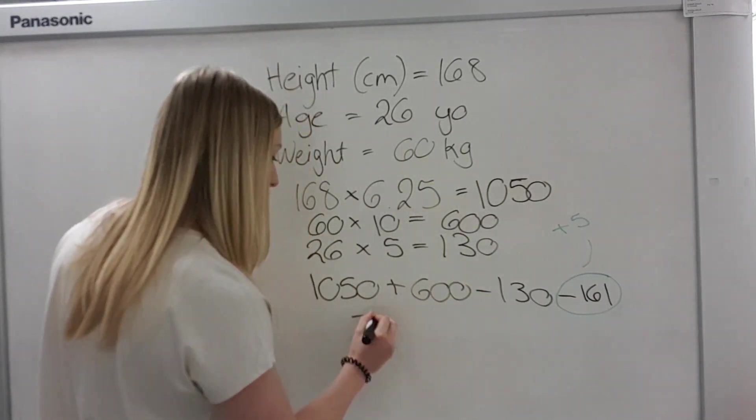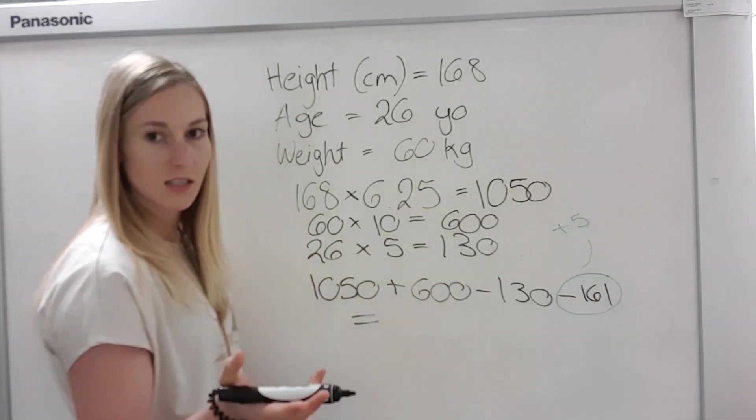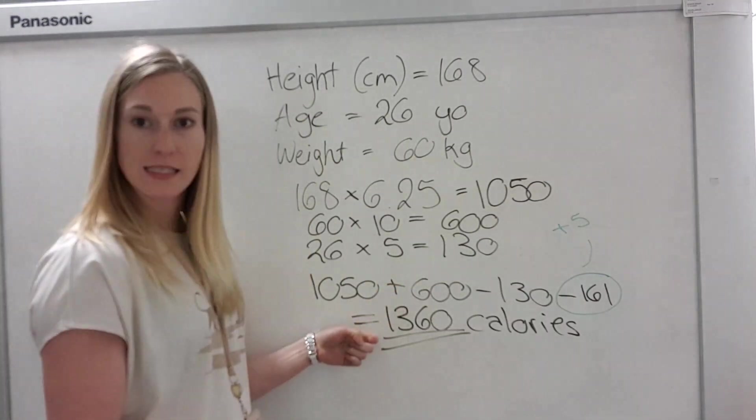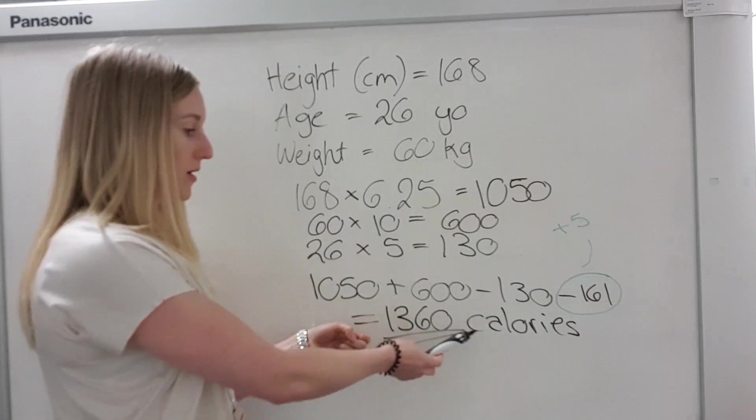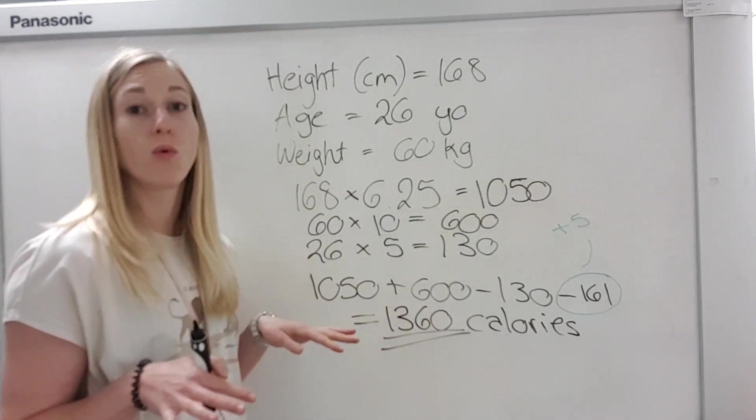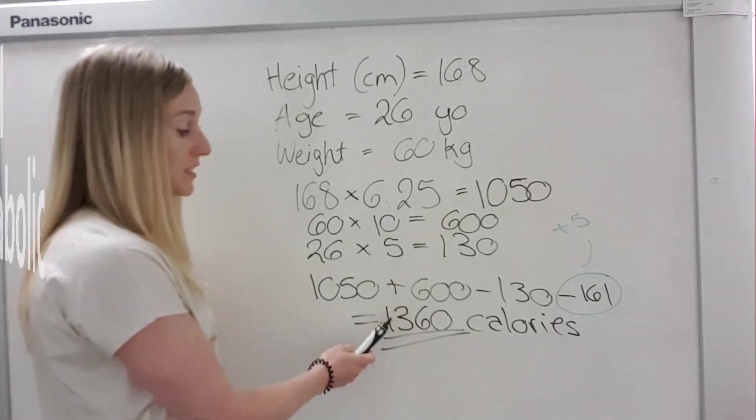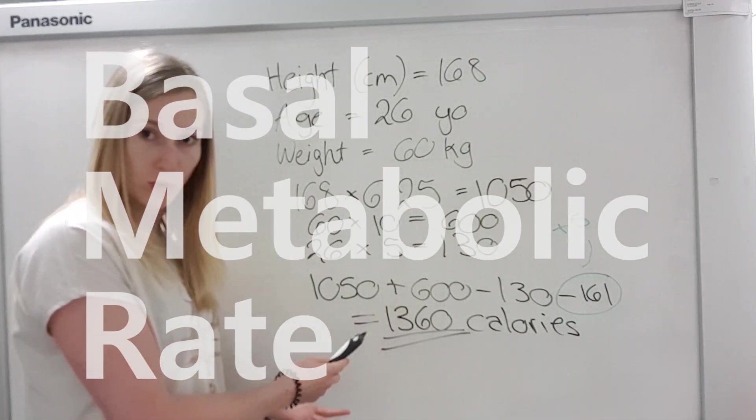So that's my total. I will round it up so that it's easier for later. I'll use 1360. So 1360 is the amount of calories I would burn if I would do nothing all day long. So I'll just be lying there in bed and do absolutely nothing. This is the amount of calories my body would burn.